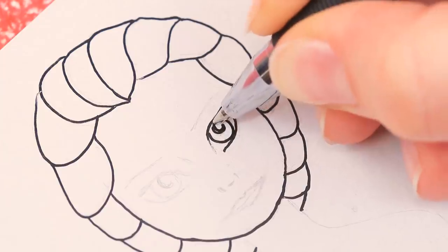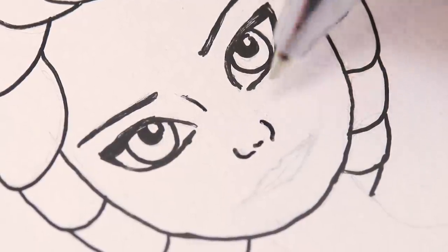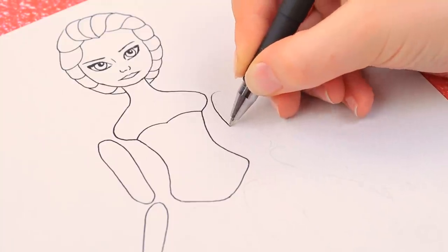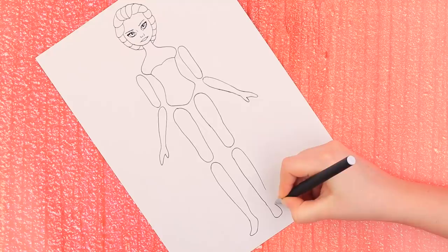Start with a hairstyle and a face. It turns out cute, doesn't it? Move on to the neck and the body. The arms and the leg will consist of two pieces so our doll can move.